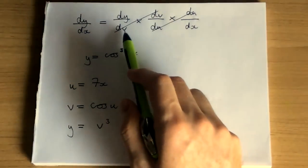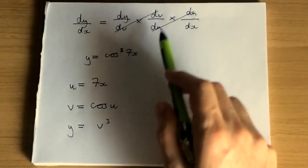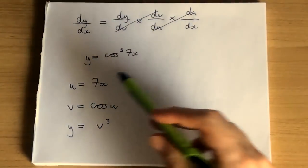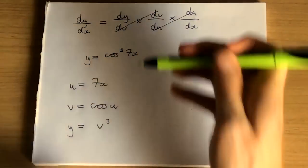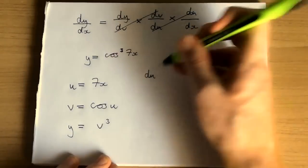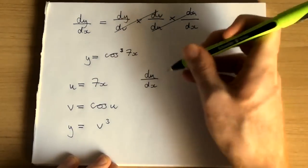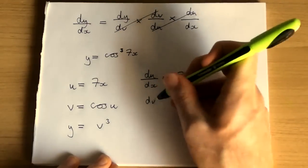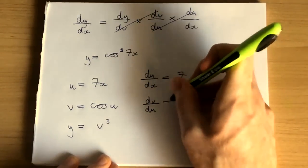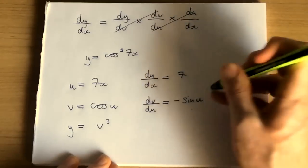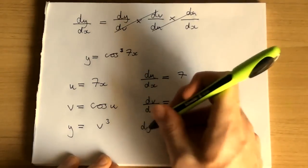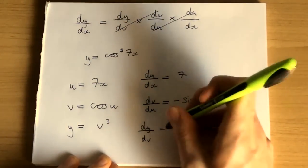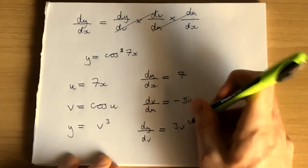So to get each part, dy/dv, dv/du, and du/dx, we have to differentiate these. So we have du/dx is 7, dv/du equals minus sin u, and dy/dv equals 3v squared.